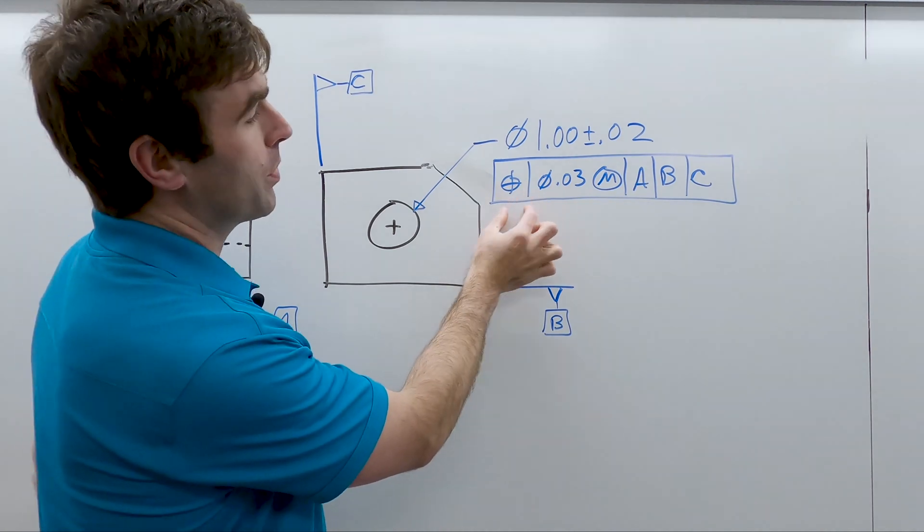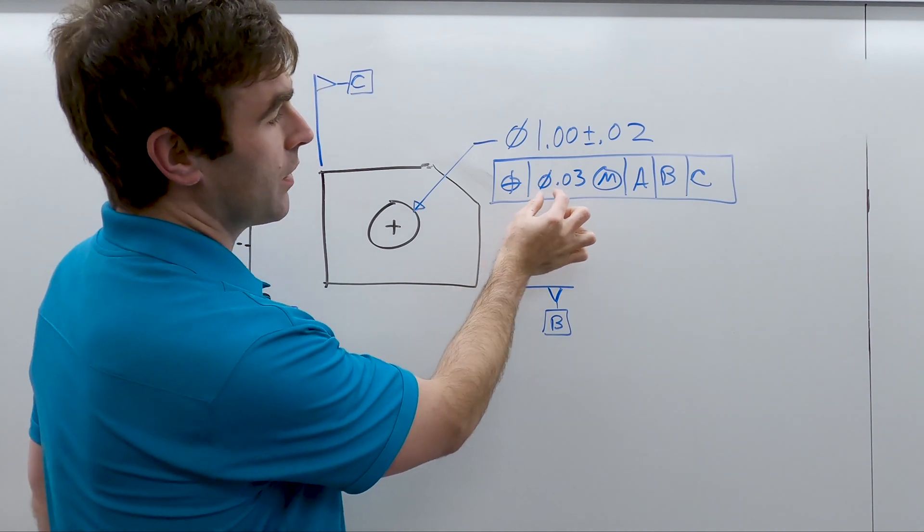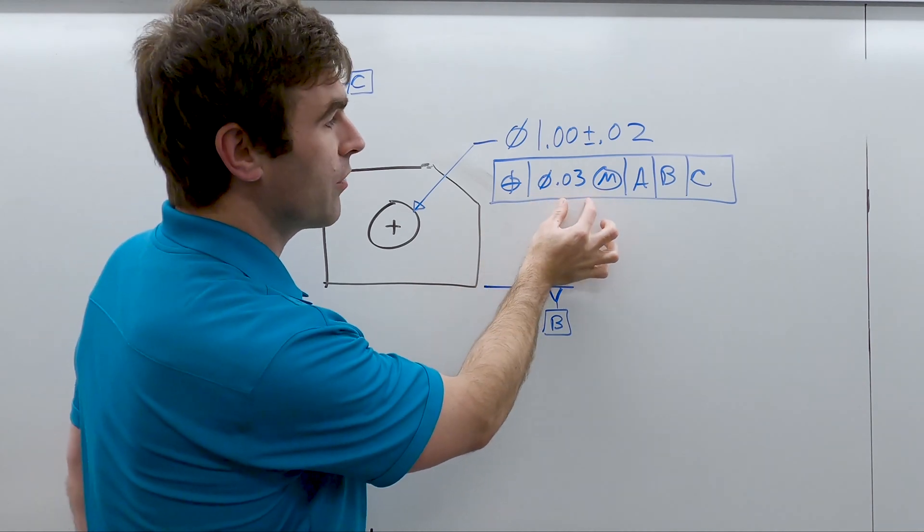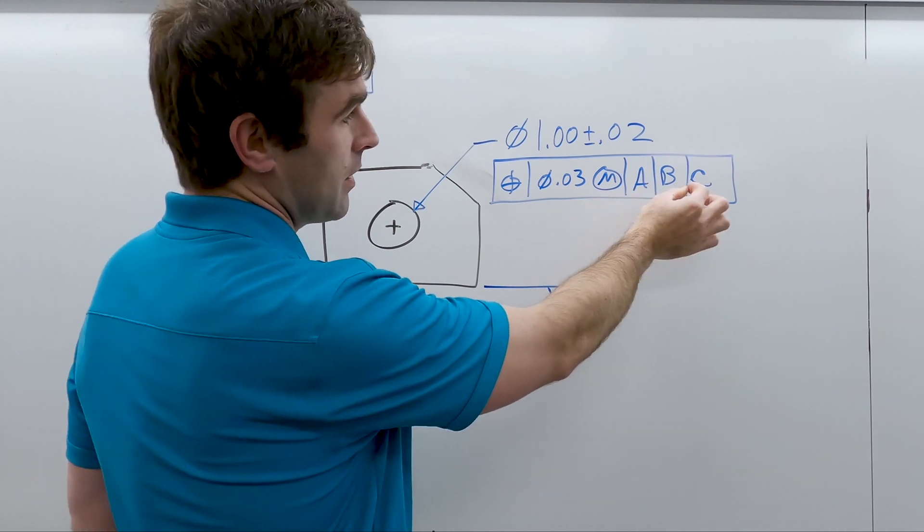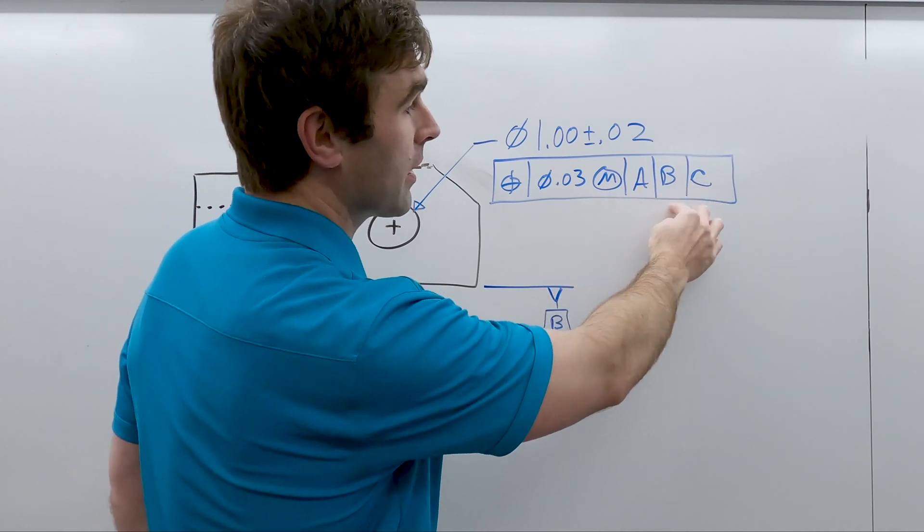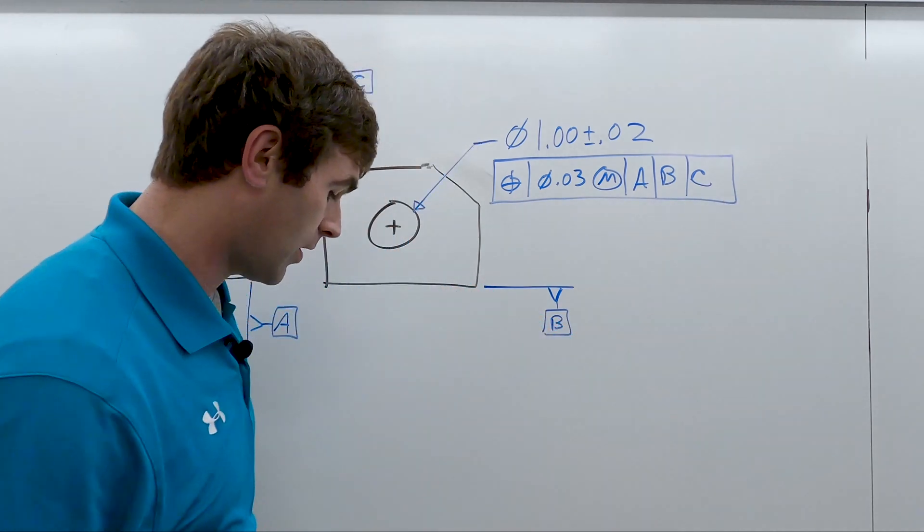So we read this: we have a positional tolerance with a cylindrical tolerance zone of 30 thousandths, but only at MMC, in relation to A primary, B secondary, and C tertiary.